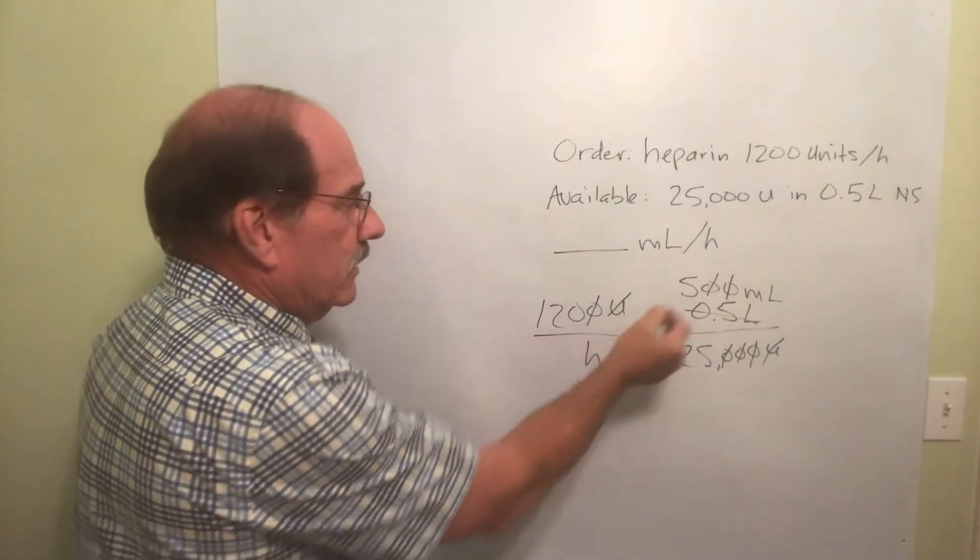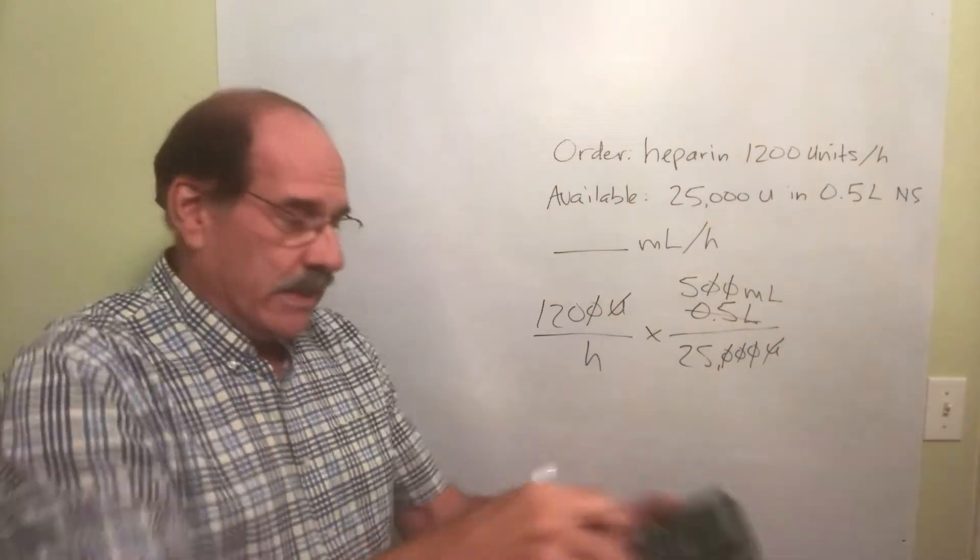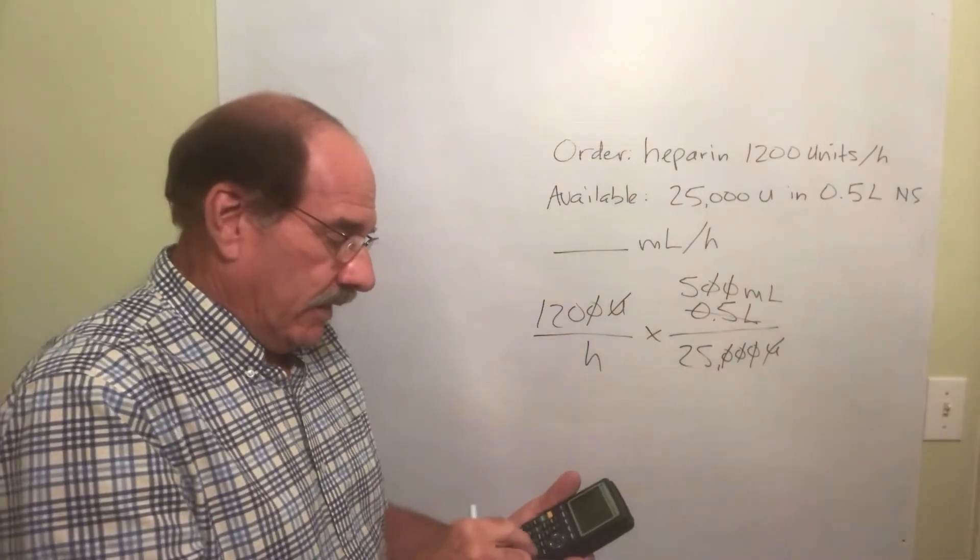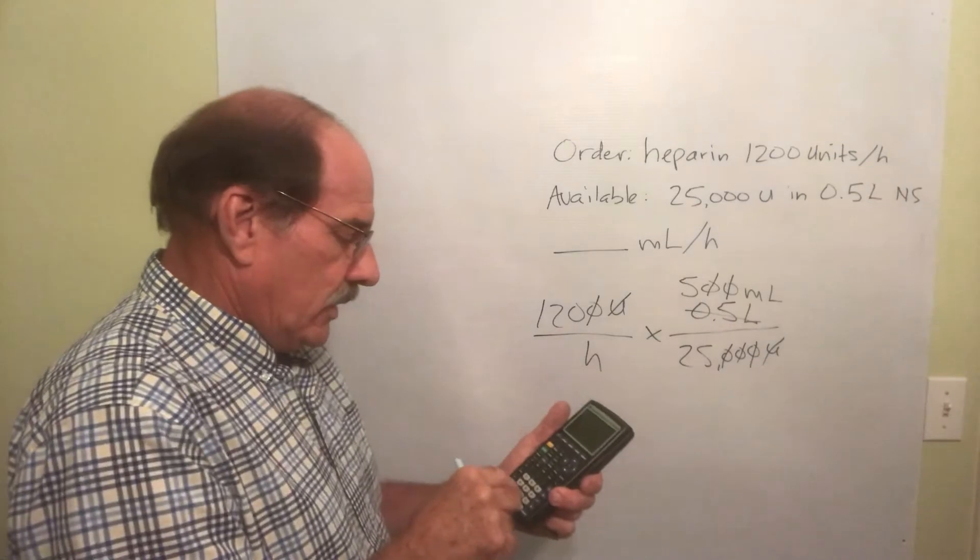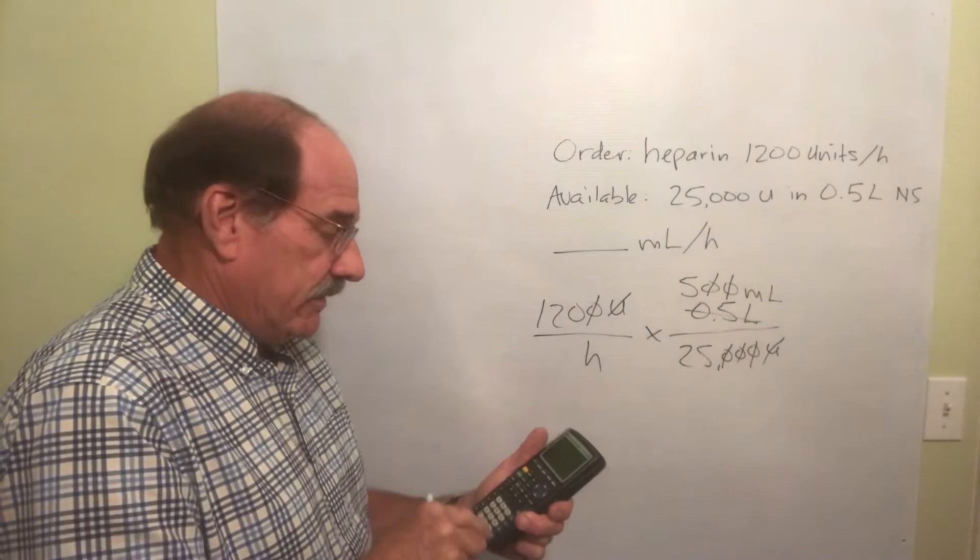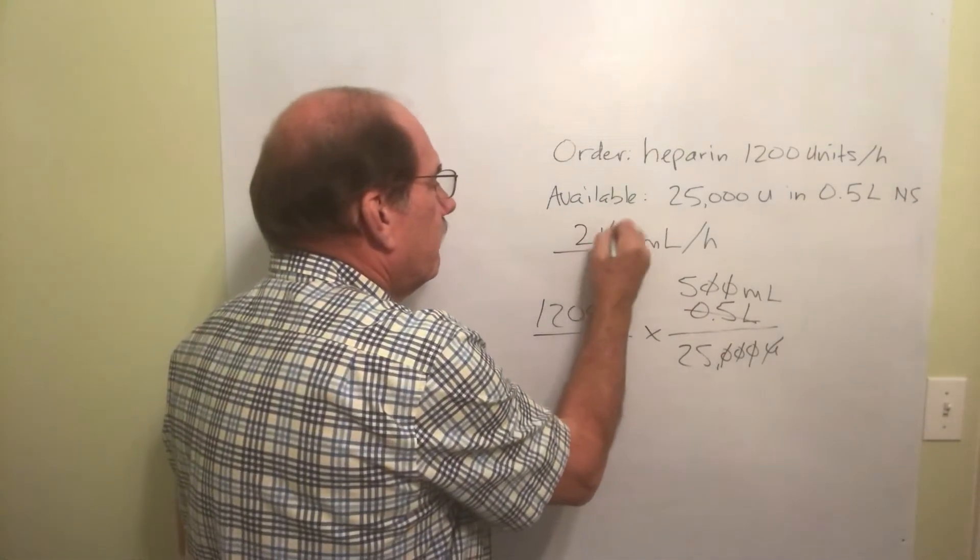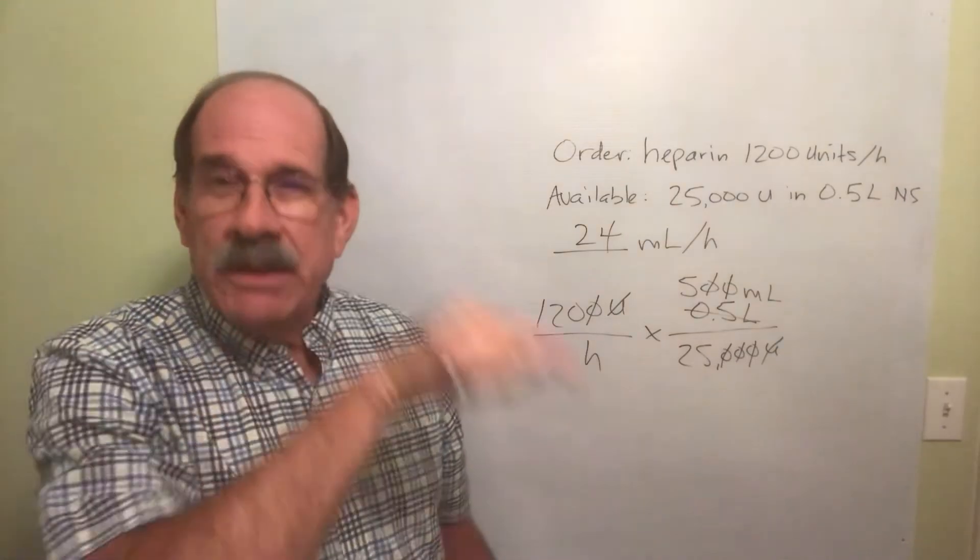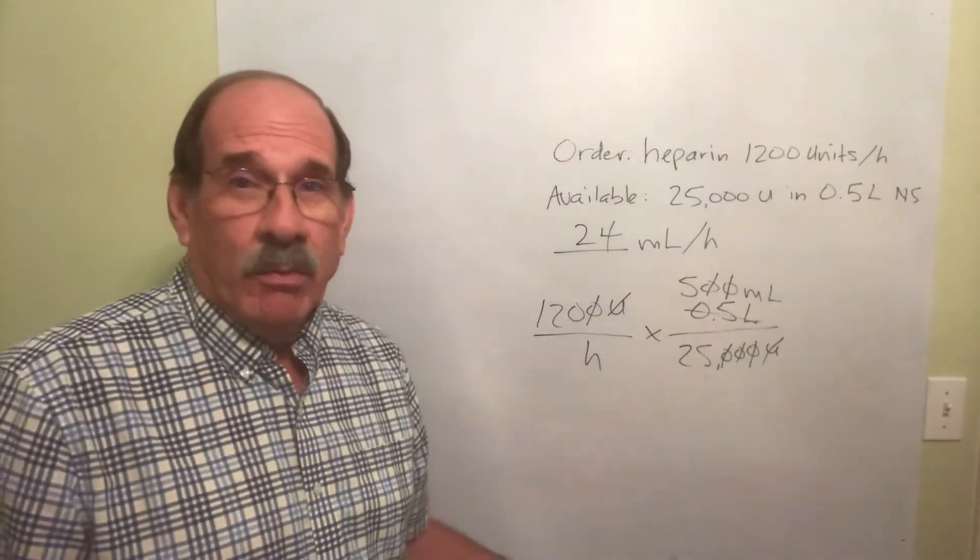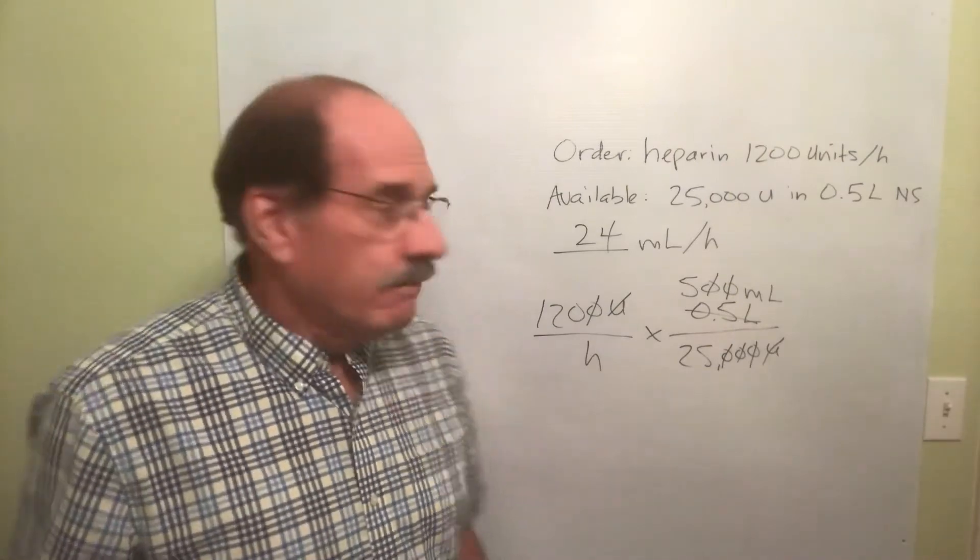120 times 5 divided by 25. So with my handy dandy fancy calculator, I do 120 times 5 divided by 25. The answer is 24. 24 milliliters per hour. And I punch that number into my infusion pump or whatever that little machine is I've got. And it's all taken care of.